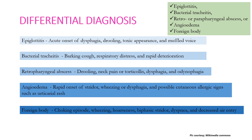Foreign body aspiration is characterized by sudden onset choking, wheezing, hoarseness, biphasic stridor, dyspnea, and decreased air entry. The first three differential diagnoses — epiglottitis, bacterial tracheitis, and retropharyngeal abscess — are infectious causes generally associated with fever, whereas angioedema and foreign body are non-infectious and not typically associated with fever unless there is superadded bacterial infection.